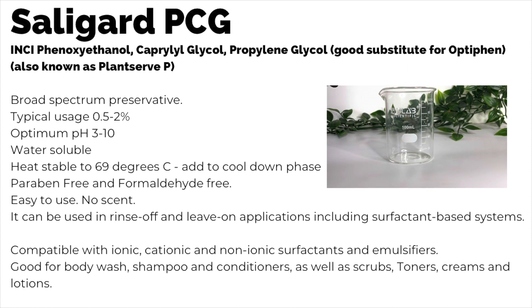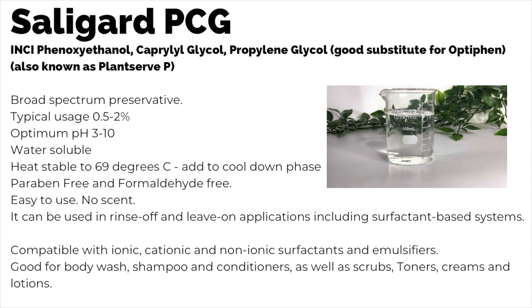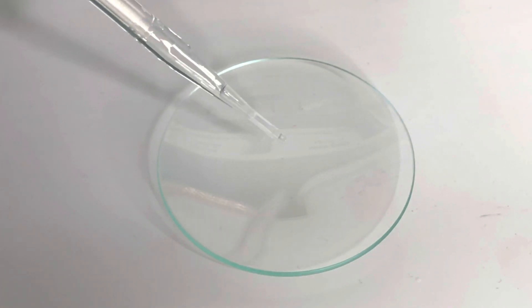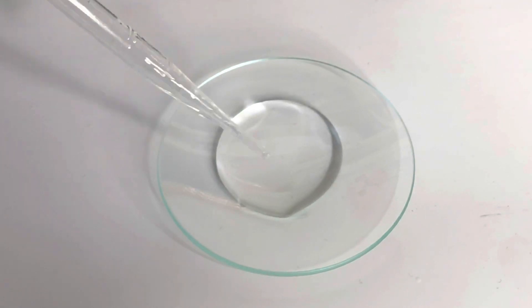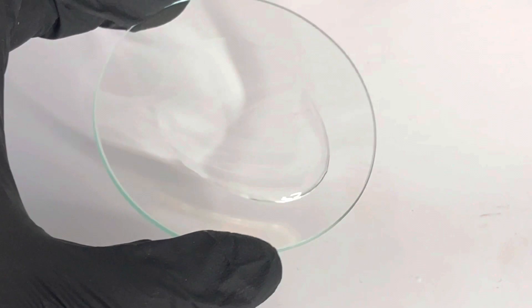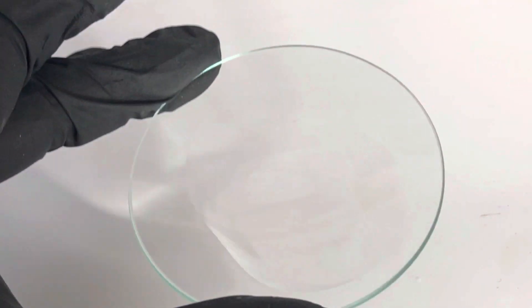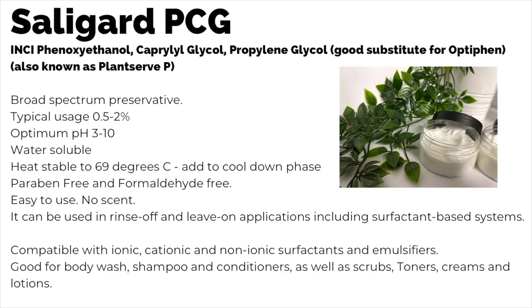Next is one of my favourite preservatives to use at the moment: Saligard PCG. The INCI is just there for you. It's also a good substitute for Optifen if you can't find that in the UK, and it's also known as PlantServe P. It's a broad spectrum preservative. Typical usage rate is 0.5 to 2% — make sure you're using it at 2% if you're making creams and lotions. Optimal pH is between 3 and 10, so again a very wide range. It's water soluble, so it's also very good for toners. It's heat stable to 69°C, so add it to the cool down phase. It's paraben free and formaldehyde free, easy to use, has no scent of note, and it's compatible with ionic, cationic, and non-ionic surfactants and emulsifiers — take note of that before you formulate with it.